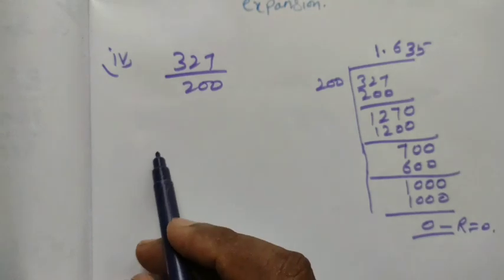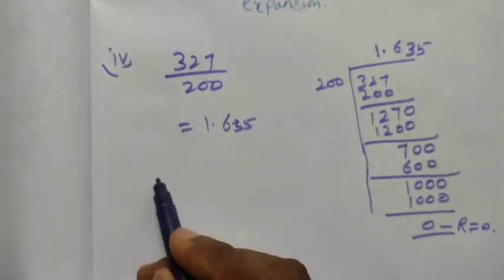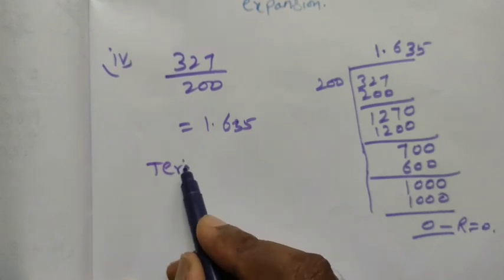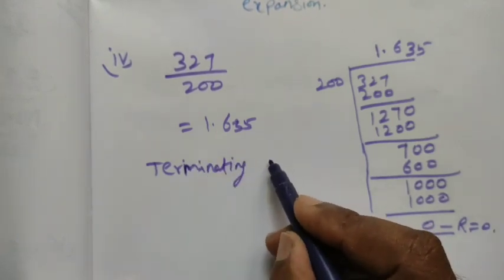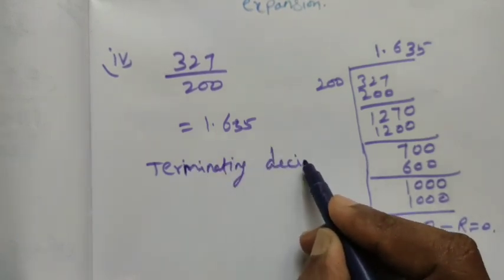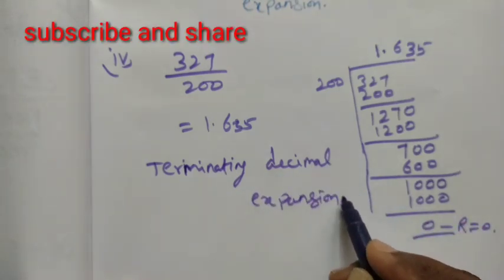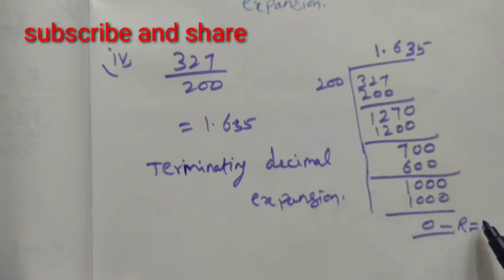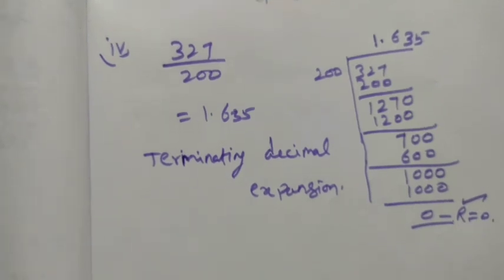327 divided by 200 equals 1.635. So this is terminating, terminating decimal expansion. Terminating decimal expansion: first condition is remainder equal to 0. Remainder equal to 0, we can say it is a terminating decimal expansion. Thank you students.